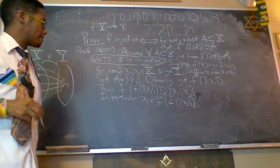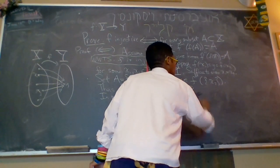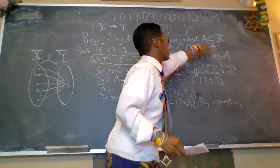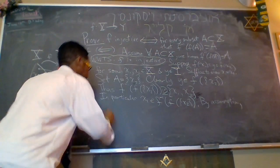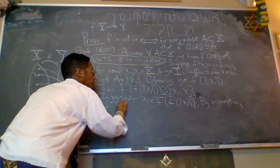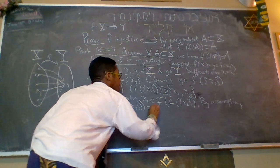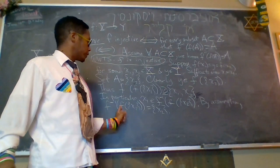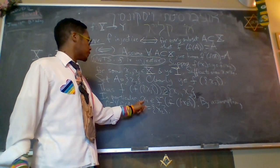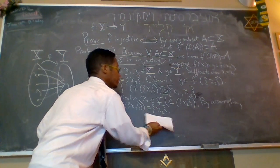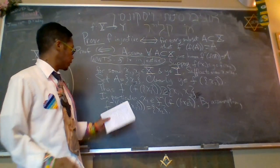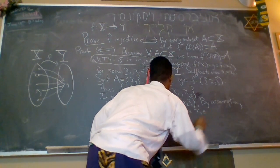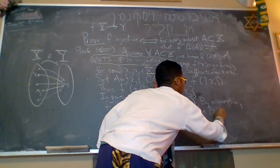By assumption, now, by assumption, we have the set equality for every A, including this particular A. So, by assumption, the inverse image of the image of the set containing x2 is just the set containing x2. That's true by assumption. I'm just letting A equal the set containing x2. So, the inverse image of f of A equals A. And x1 is inside of this set, this set, which is equal to this set. Did I say it's less recently? Let's say hence. Hence, x1 is an element of the set containing x2.